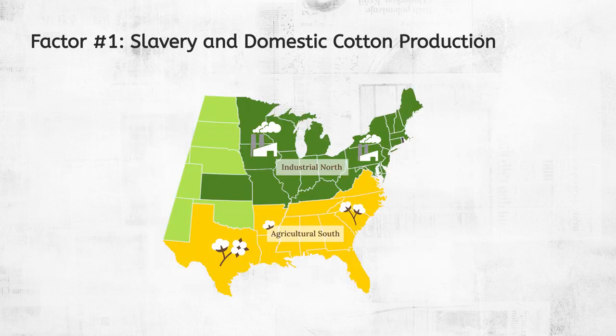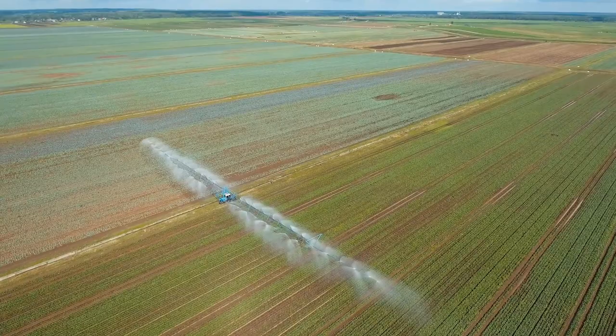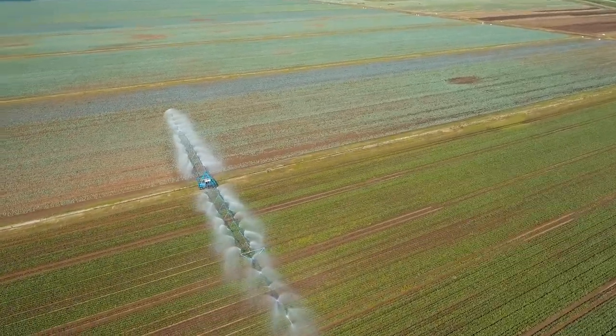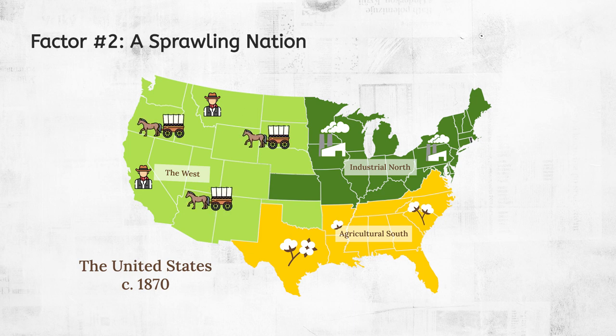Even after slavery had been abolished in the North, slavery continued to remain critical to the Southern agricultural economy and the industrialized Northern economy. After the Civil War and the abolition of slavery, agriculture became increasingly industrialized and mechanized with the development of chemical fertilizers, tractors, and other technologies. Factor number 2 – A Sprawling Nation. A second factor that affected American industrialization is its size and regional divisions. In addition to the divide between North and South, there was also an industrial gap between the West and the rest of the nation. In the 1800s, the Wild West – famous for its cowboys, homesteaders, and lawless towns – was a mix of new states and loosely organized territories.